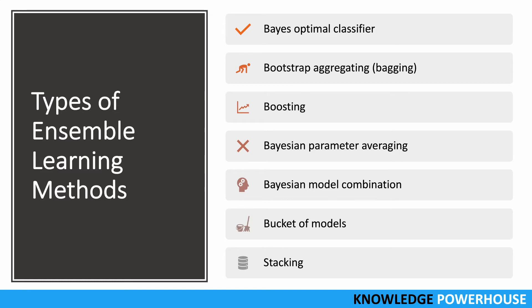There are various types of ensemble learning methods. Some of the popular ones are: Bayes optimal classifier, bootstrap aggregating (also known as bagging), boosting, Bayesian parameter averaging, Bayesian model combination, bucket of models, and stacking.